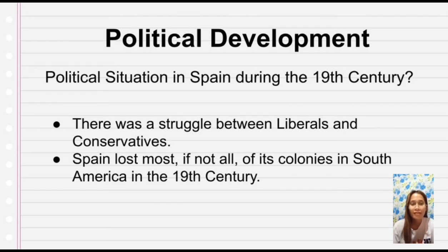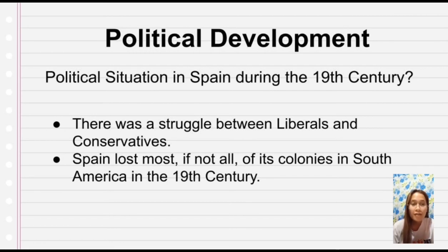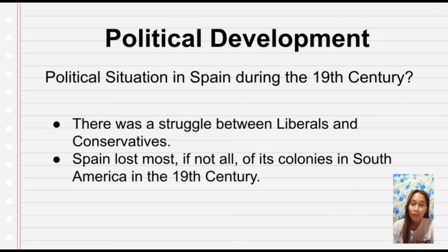What I mean by this is that the conservatives wanted to continue with the royal bloodline and government ruled by the royal family, while the liberals did not want the royal family to continue to rule — they wanted their leader to come from the people, not the royal family. So in the 19th century, Spain was characterized by intermittent civil wars, and Spain lost most if not all of its colonies in South America.